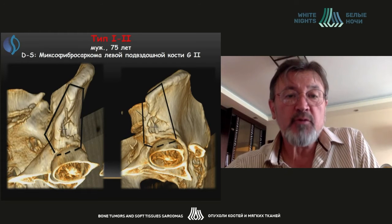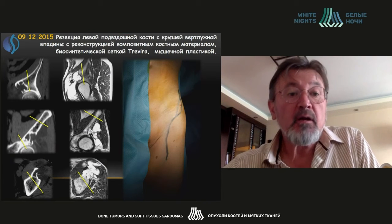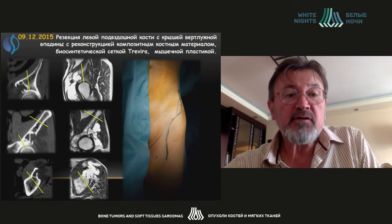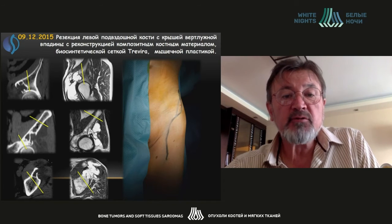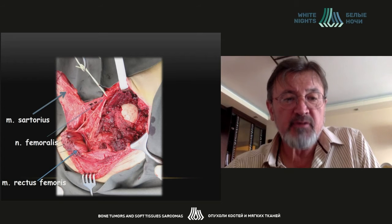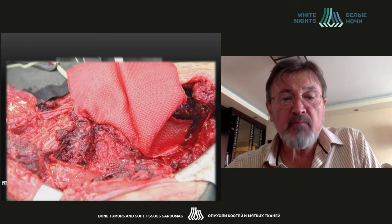The next case is a 75-year-old patient with myxofibrosarcoma of the left ischial bone. You can see the CT and MRI during preoperative planning. The anterior part of the acetabulum was involved, so we had to use another method. You can see the surgical approach and the resection of the acetabulum dome — this is the mid part. We separated all the muscles needed for plastic surgery, and you can see the tissue fixation and the anchor screws used.